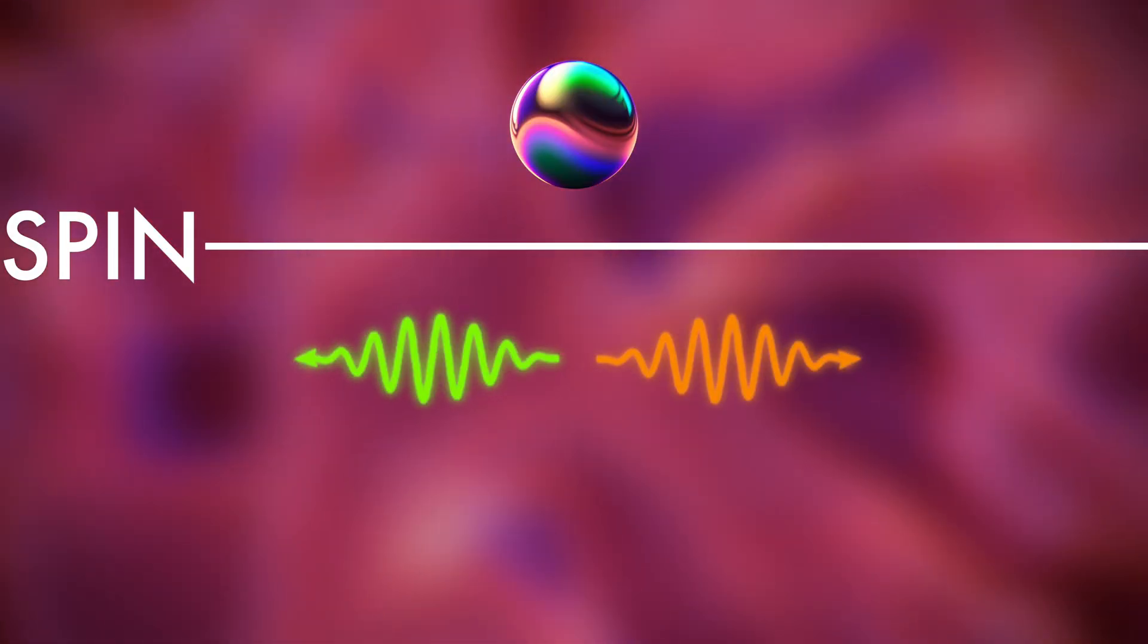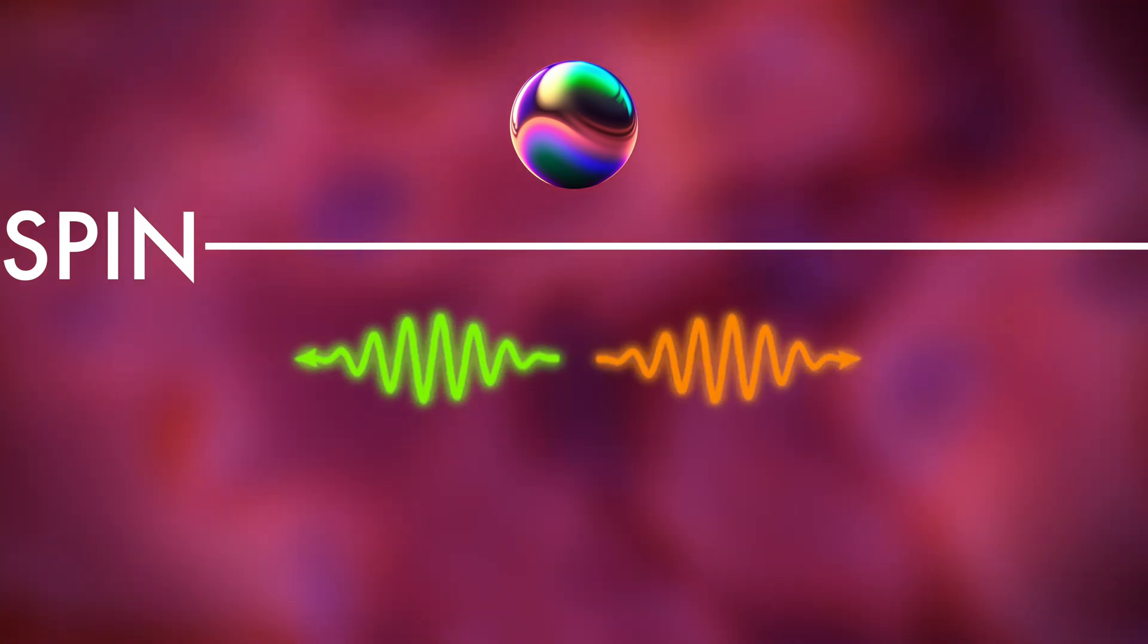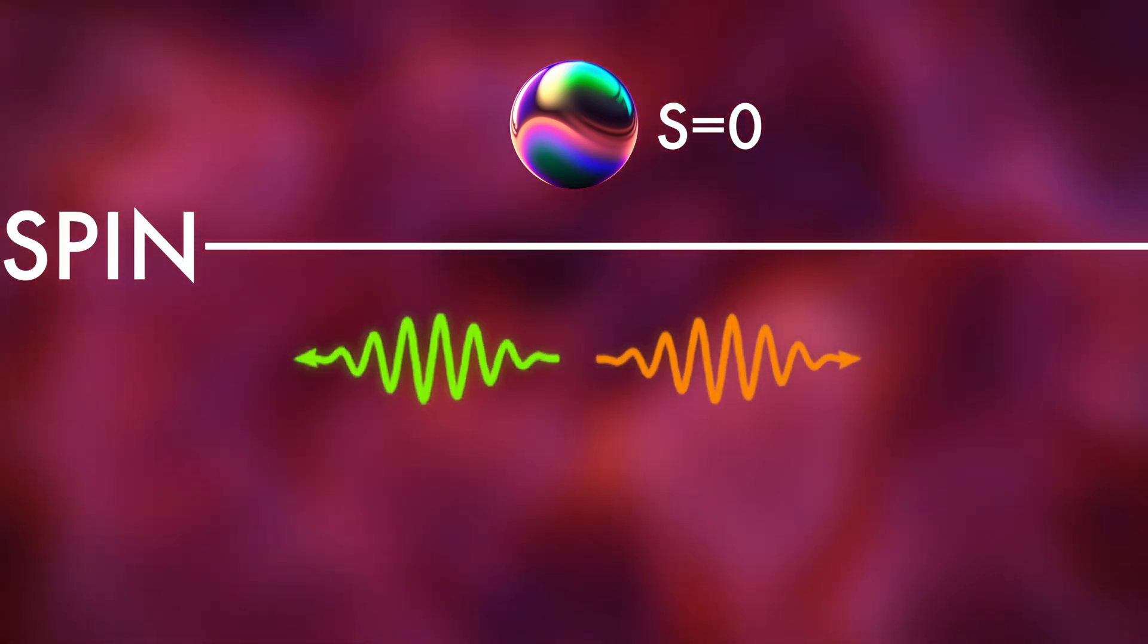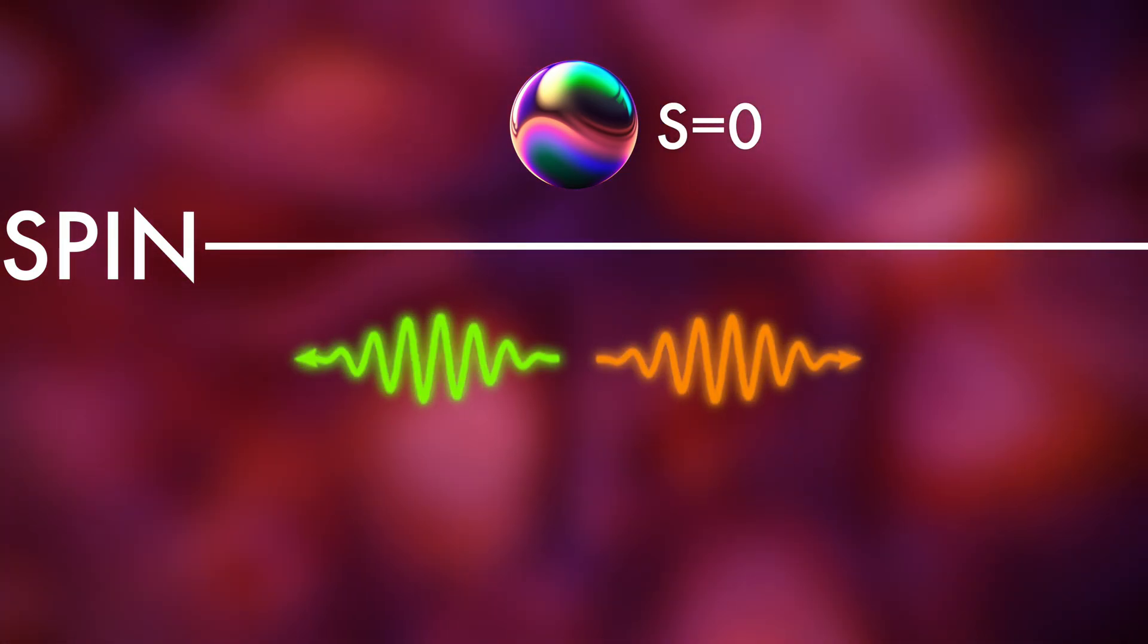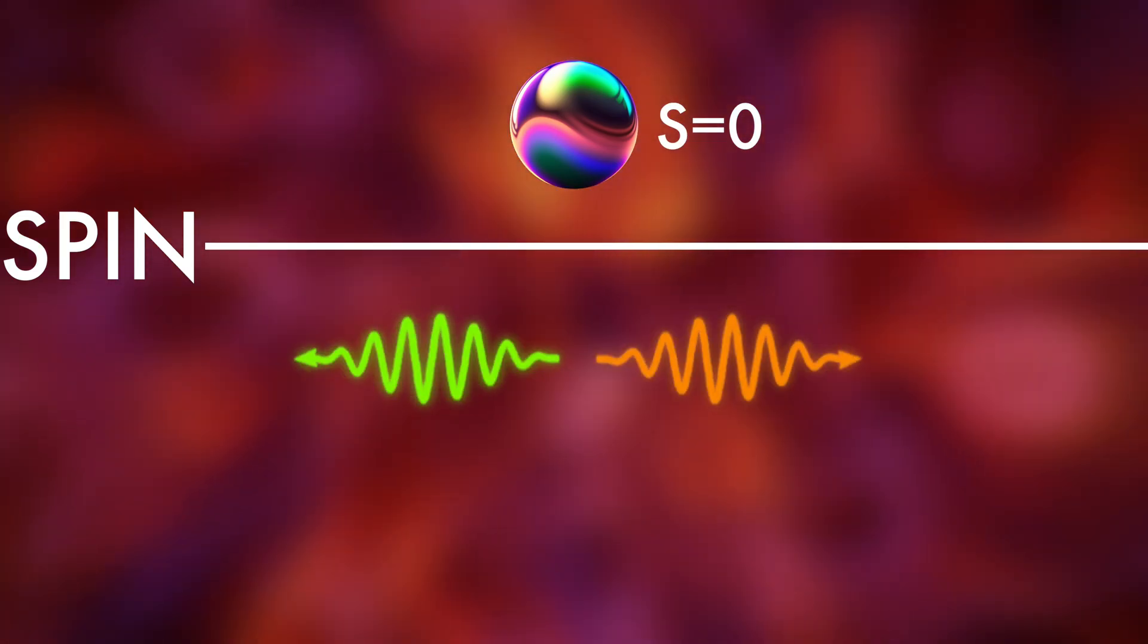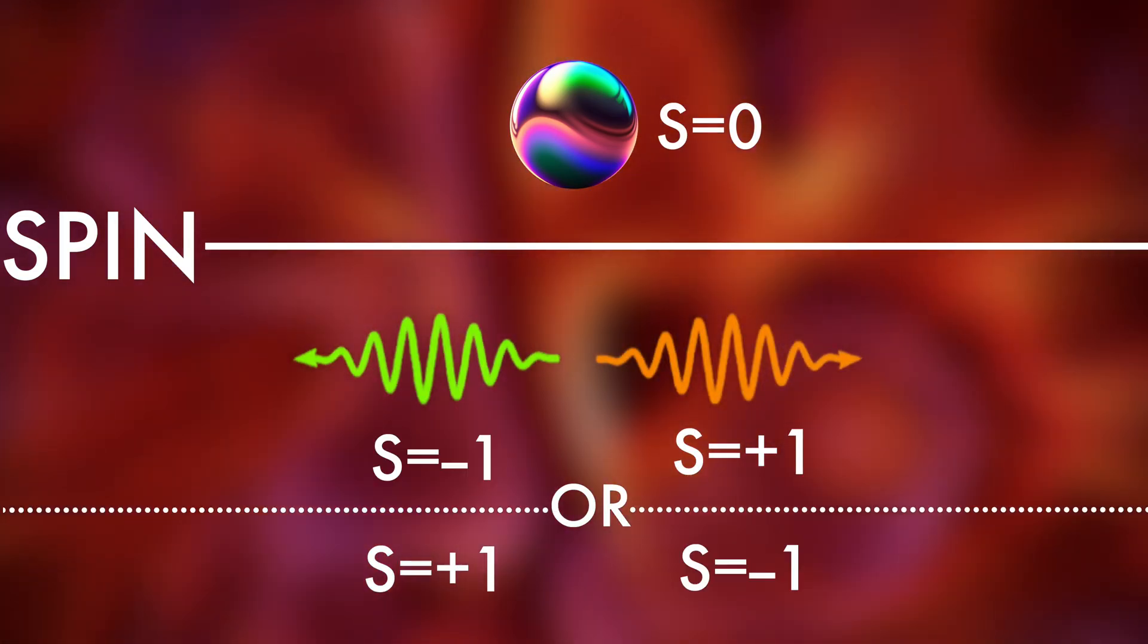The important part is that this particle can decay into two photons, two particles of light. The total spin must be conserved by this process, so as we start with spin zero, it must remain zero after the decay. This only works if one photon has spin plus one, and the other one has spin minus one.